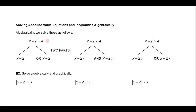When you go to solve any absolute value equation or inequality, there are always two parts. You want to be certain that you're using two parts to solve it or you will certainly get it wrong. The first part is to just pretend the absolute value doesn't exist — just drop the absolute values. In this case, the first part would be x minus 2 equals 4.